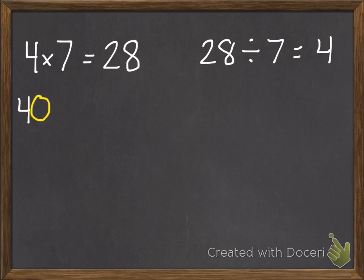Once we know this, we can continue the pattern. So if we have a 0 added onto our 4 to make it 10 times greater, we know our answer is going to be 10 times greater, 280.